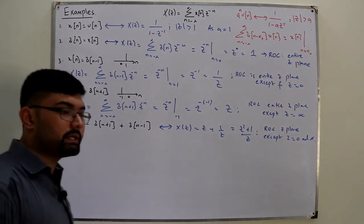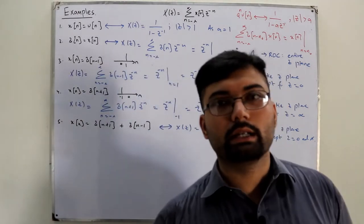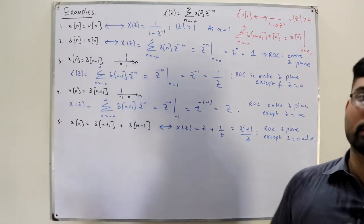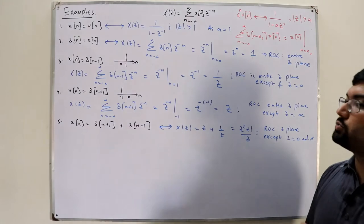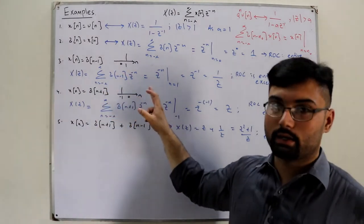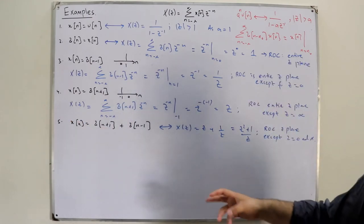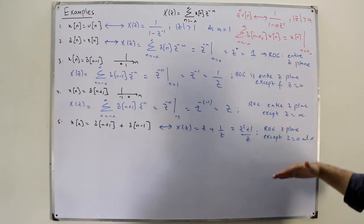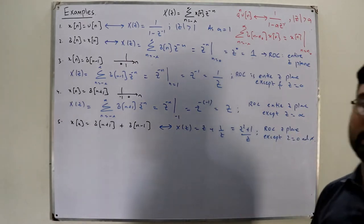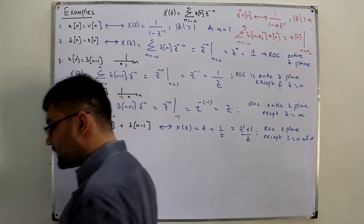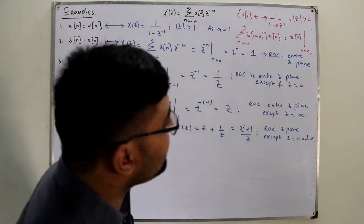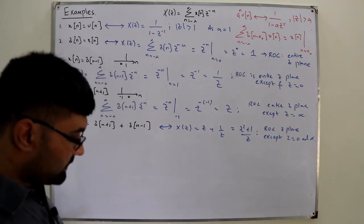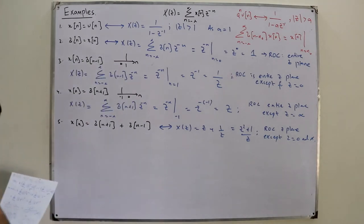You've seen the properties now, though we haven't formally covered them — we'll see them in the next video. In that video we see the properties of the ROC: what happens for a right-sided signal, a left-sided signal, a double-sided signal, and a finite duration signal. You should link these two videos so you understand when to include or exclude 0 and infinity.